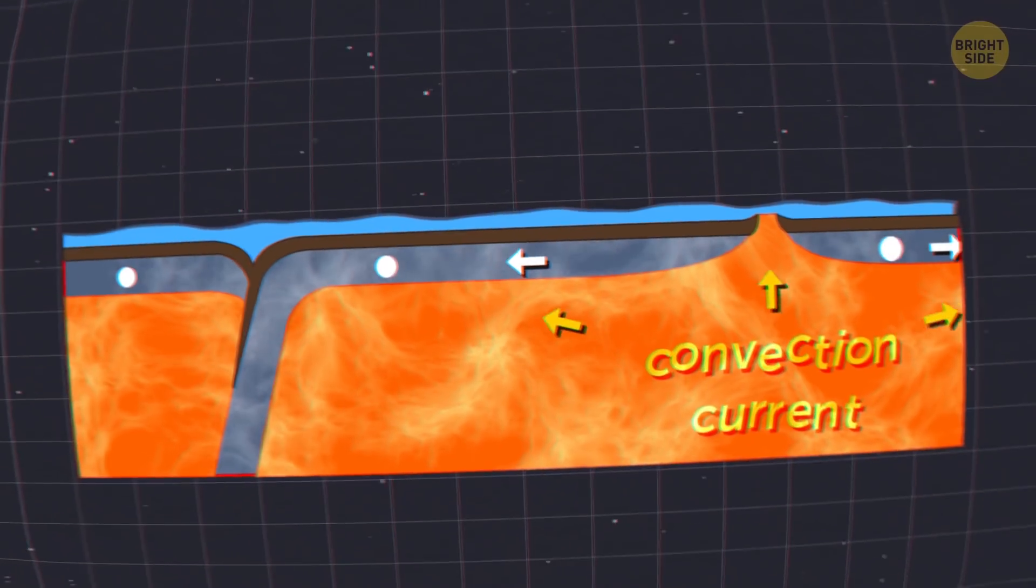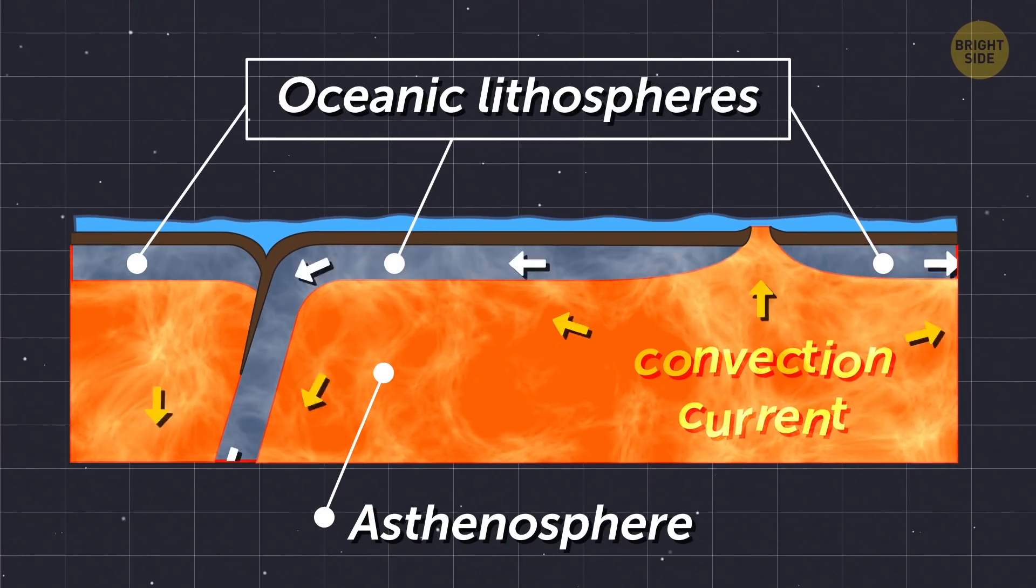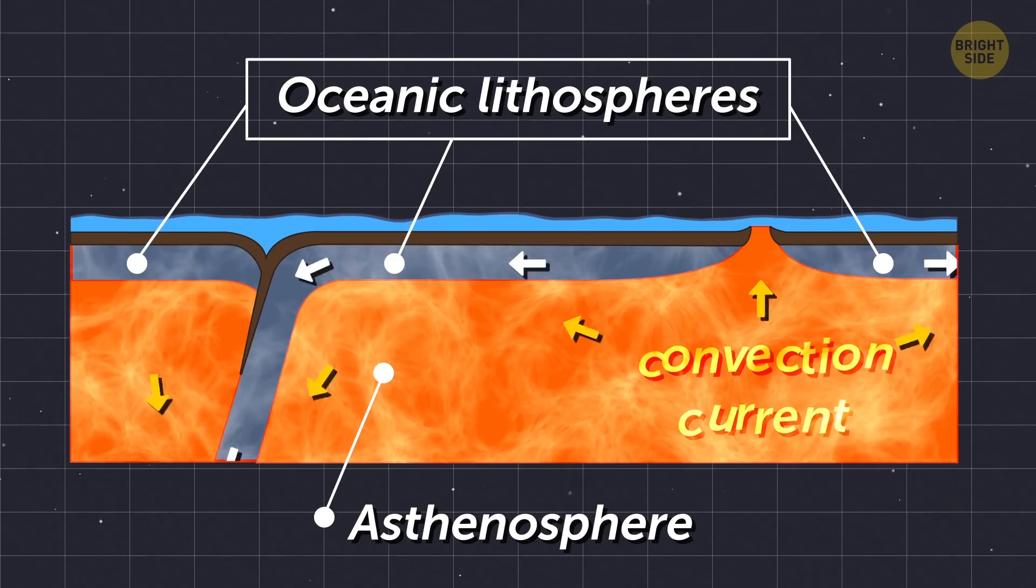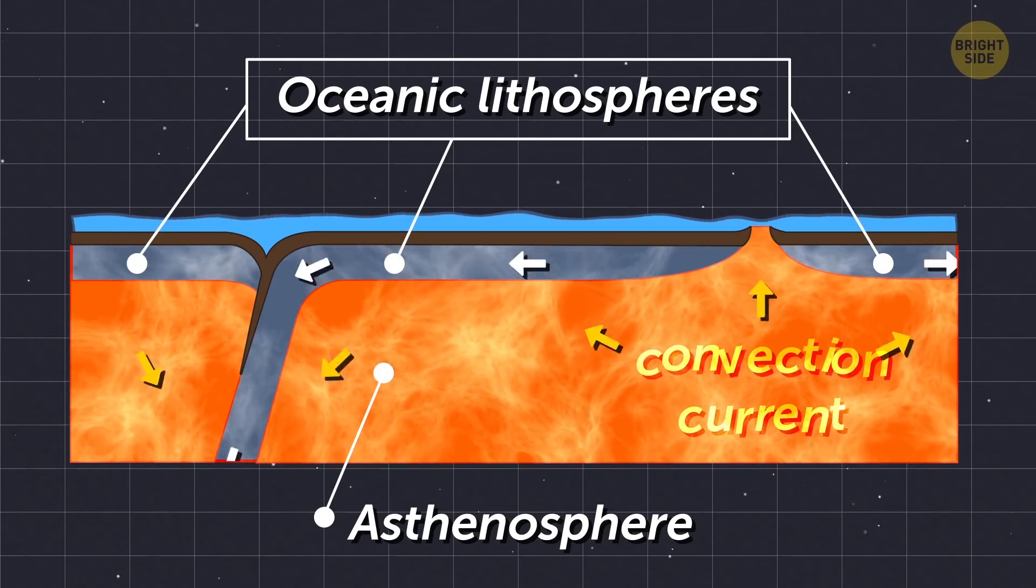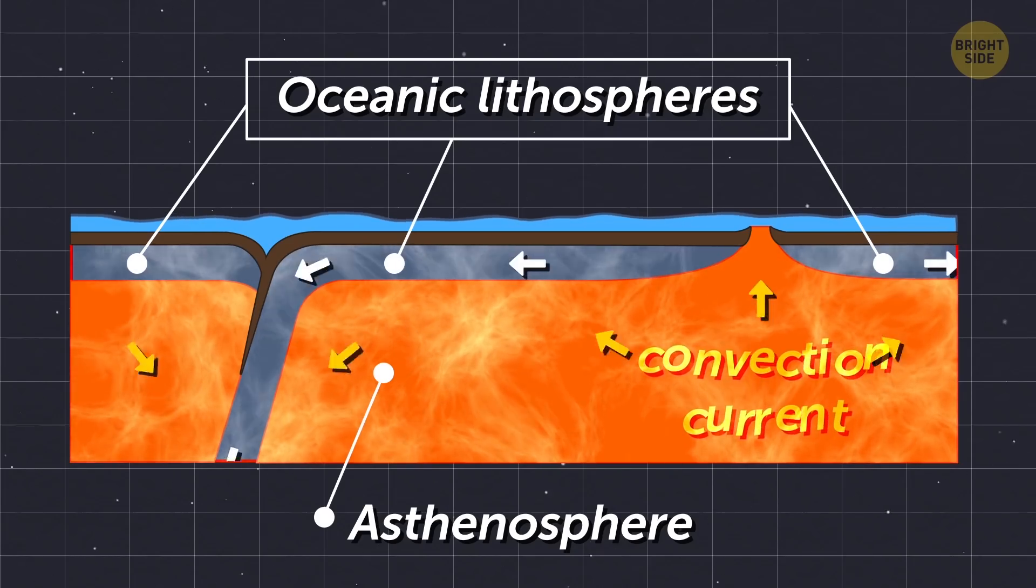The seafloors started spreading, and that resulted in warmer oceanic lithospheres. Now, those lithospheres had low density, and when they warmed up, they couldn't dive as deep as the cooler ones did.